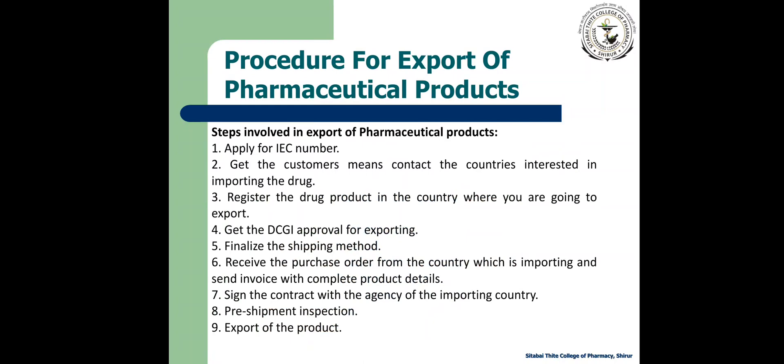The steps involved for export of pharmaceutical products are: apply for IEC number; get the customer — that is, contact the countries interested in importing the drugs; register the drug product in the country where you are going to export; get the DCGI approval for exporting. DCGI is the Drug Controller General of India. Then finalize the shipping method, receive the purchase order from the importing country, send the invoice with complete product details, sign the contract with the agency of the importing country, and complete pre-shipment inspection before export of the product.